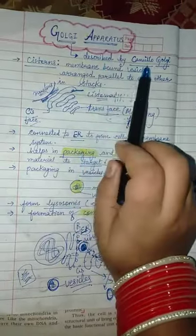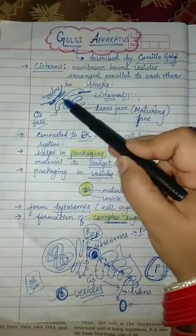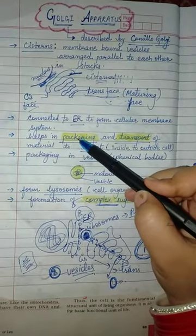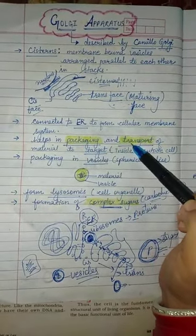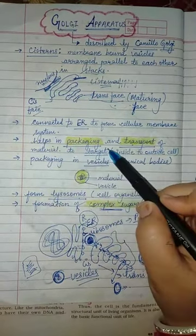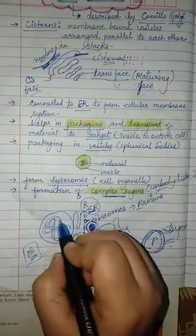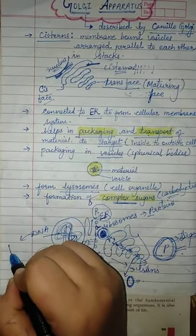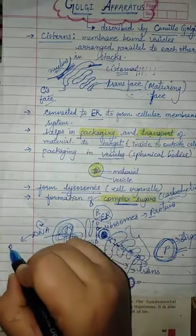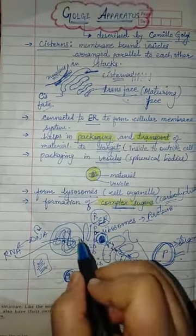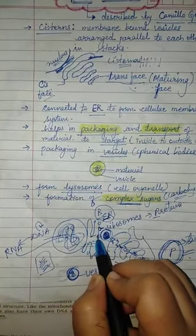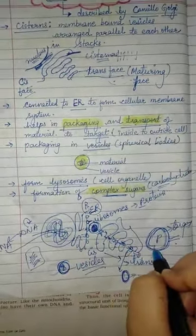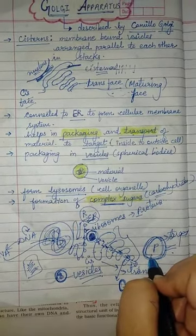To summarize: the Golgi apparatus was described by Camillo Golgi. It has a cis face near the nucleus and endoplasmic reticulum, and a trans face for secretion. It helps in packaging and transport of materials — for example, proteins synthesized by ribosomes on the RER are packaged by the Golgi and transported to their target. Thank you.